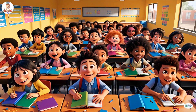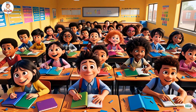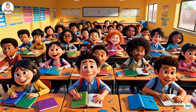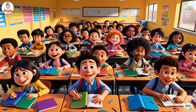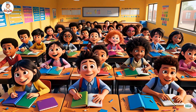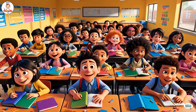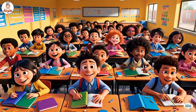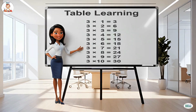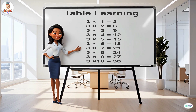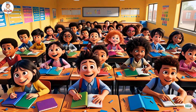Now let's start the table of three. Three ones are three, three twos are six, three threes are nine, three fours are twelve, three fives are fifteen, three sixes are eighteen, three sevens are twenty-one.